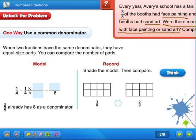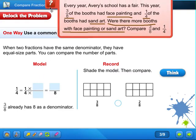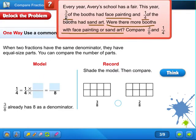So three eighths already has eight as a denominator. So we're going to try to make one fourth have eight also as a denominator. We're going to try to make this one fourth into something with eight as a denominator. So if you remember in the previous lessons, we do four times what equals eight? Four times two. Four times two equals eight.